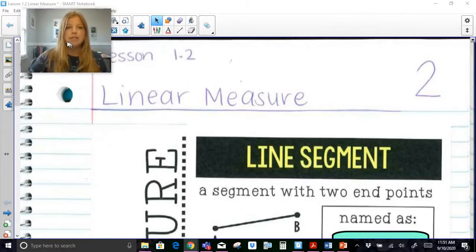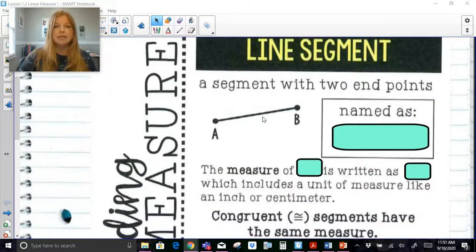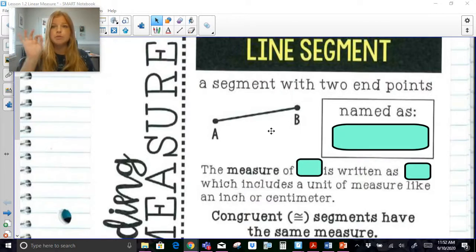So the first thing we need to take a look at is the definition of a line segment. A line segment is a segment with two endpoints. So here you see I have line segment AB and you can see there's an endpoint and an endpoint. When you're dealing with a line segment you don't use the arrows at the end. The arrows are for a ray or a line.